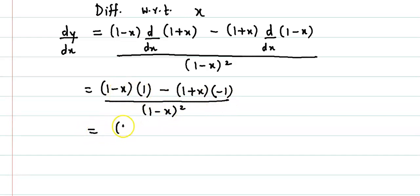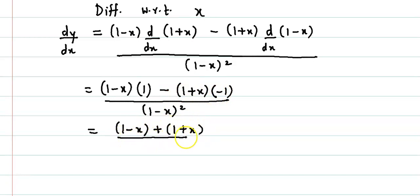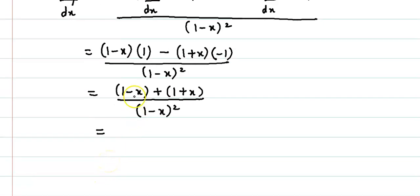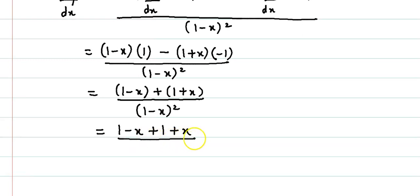So 1 into 1 minus x remains as it is, and negative 1 into the negative sign here becomes plus 1 plus x, divided by 1 minus x the whole square. Simplifying further, we have 1 minus x plus 1 plus x divided by 1 minus x the whole square.